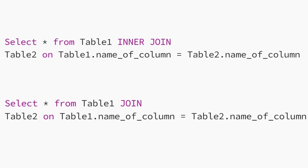The join command allows you to combine information from two or more tables. The most common join is the inner join. When you use the inner join, it will return all the values that match from both tables. The command looks like either of these options: select star from table one inner join table two on table one dot name of column equals table two dot name of column. The other option is you don't state the word inner in your statement and it defaults to inner join: select star from table one join table two on table one dot name of column equals table two dot name of column.